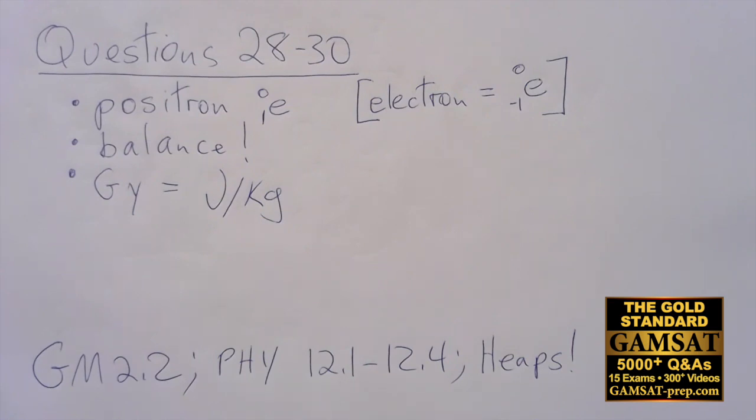It talks about the isotope being produced in a cyclotron by bombarding oxygen-18 with protons. That's a distraction because that's not what the next question is about. The question is which nuclear reaction represents the emission of positrons from fluorine-18.